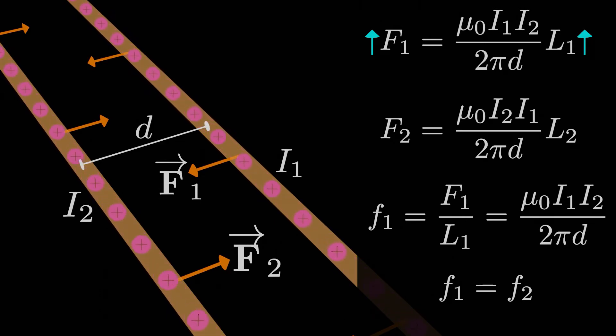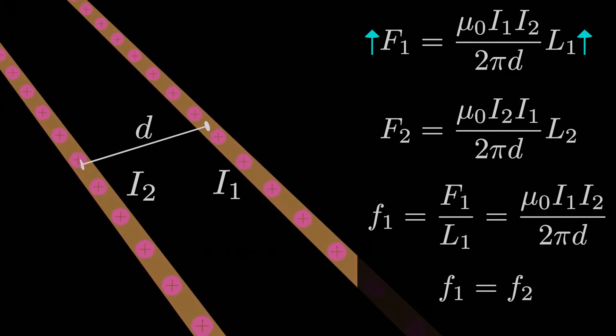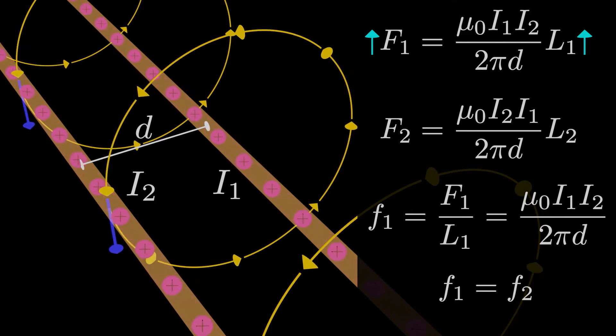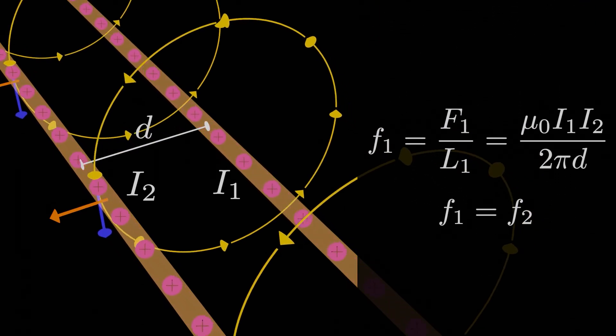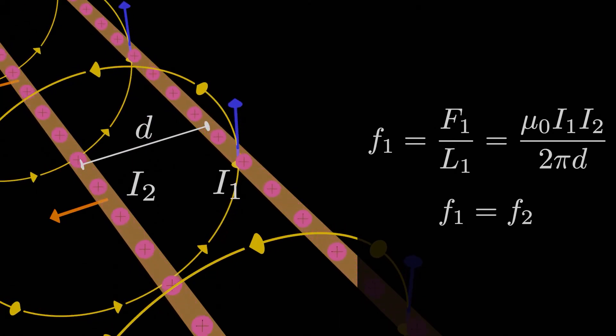The last thing we want to mention is here we solved for the magnetic force on two wires carrying current in the same direction, but what if they carried currents in opposite directions? Well we could go through all the motions again, but I encourage you to try it out for yourself. For each wire it's just two steps, find the magnetic field due to the other wire, then find the magnetic force on this wire due to that magnetic field. What we would find is that the forces on each wire are the same magnitudes as before, but pointing in opposite directions, the wires actually push each other apart instead of pulling each other together.